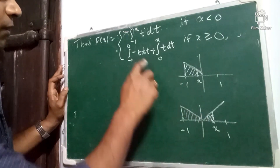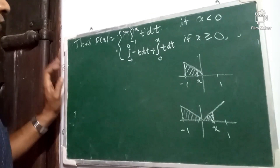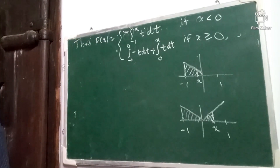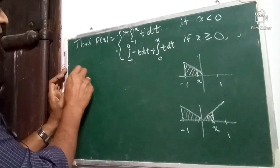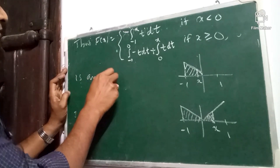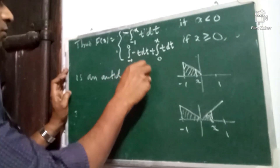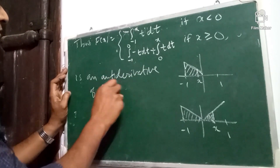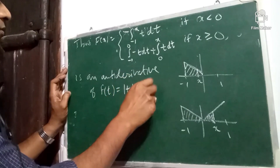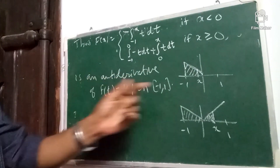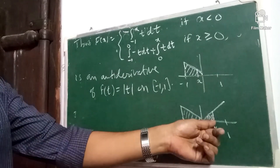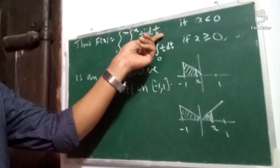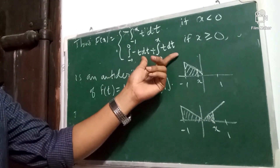This much area will be this quantity. That would be an antiderivative of the given function f of t equal to mod t on minus 1, 1. This area you can find out, and similarly this area also you can find out. This area would be the first number and this much area would be the second number.